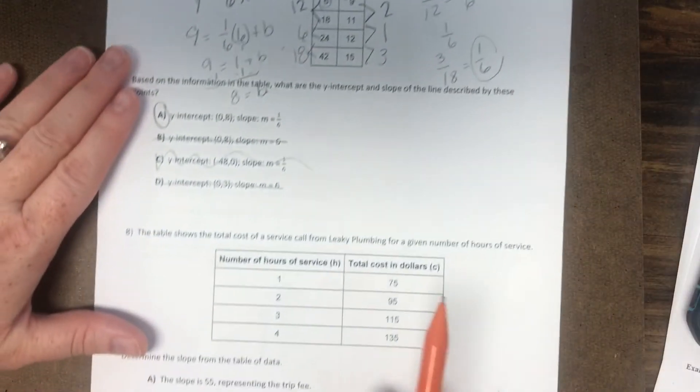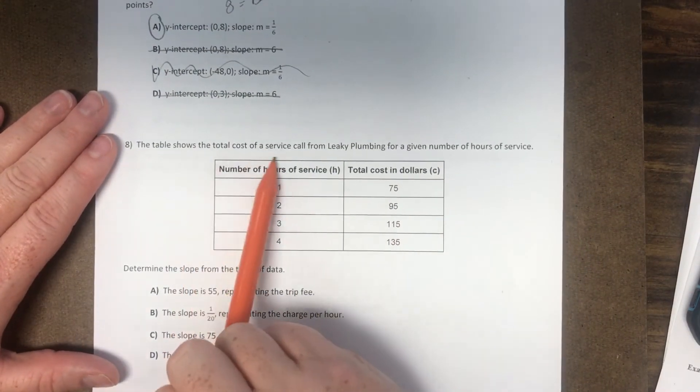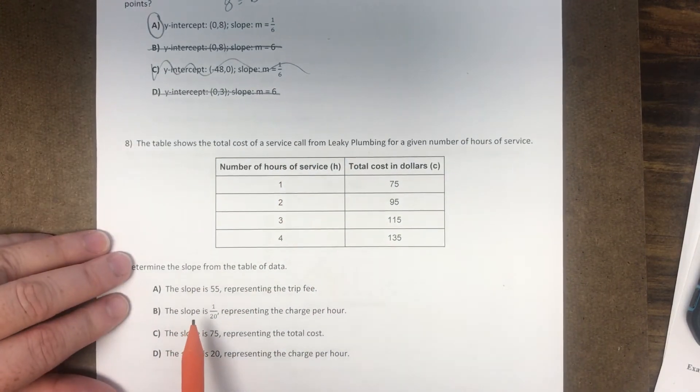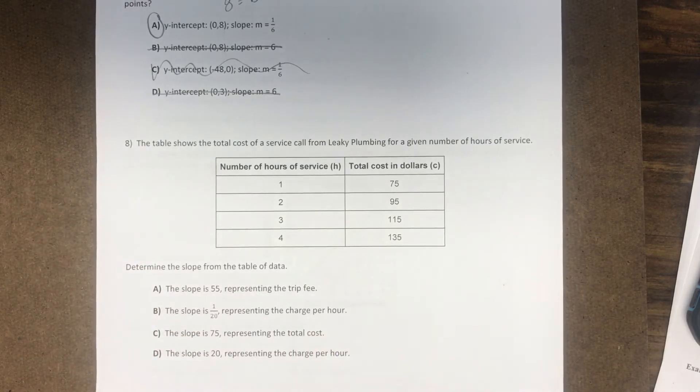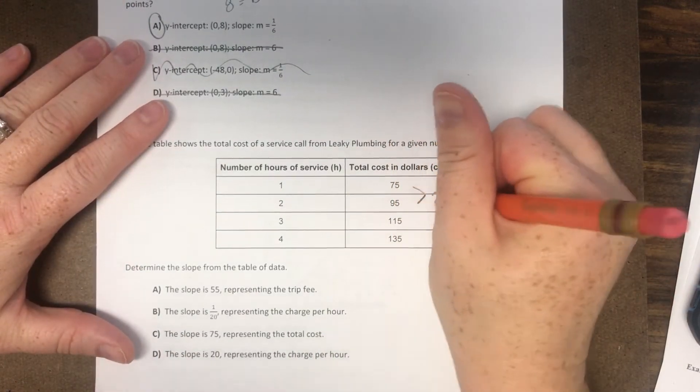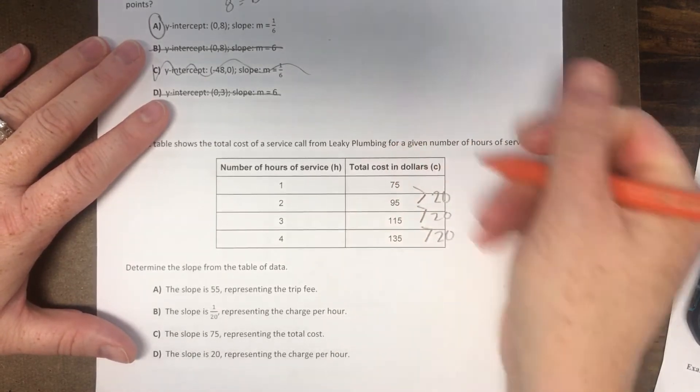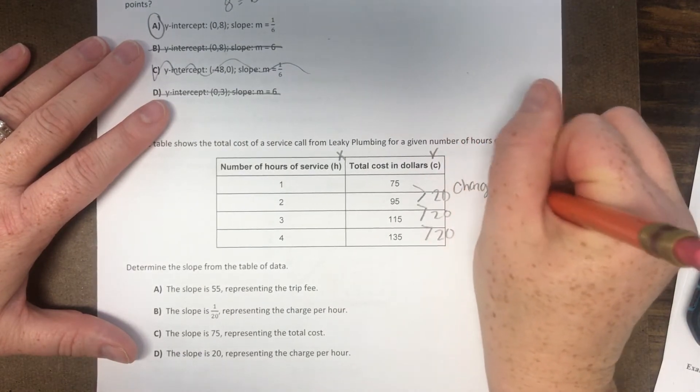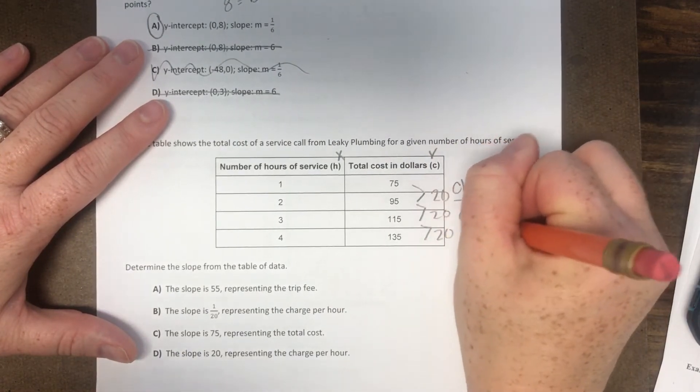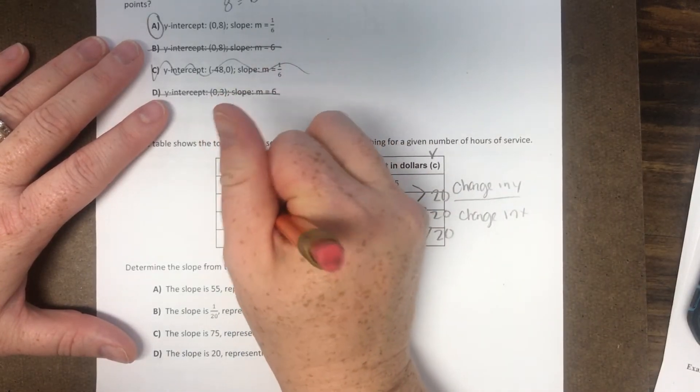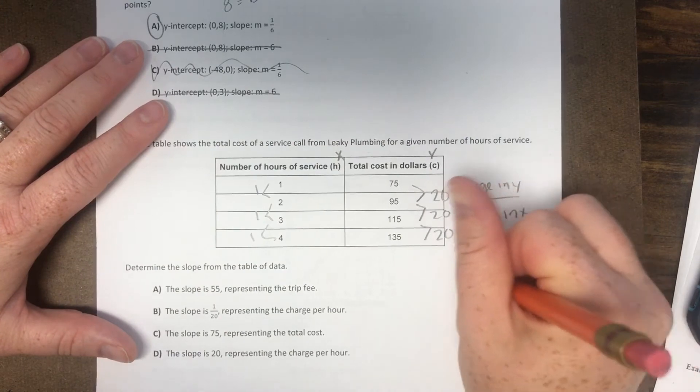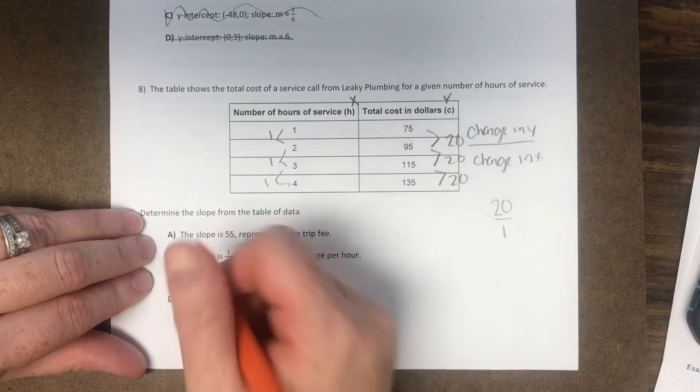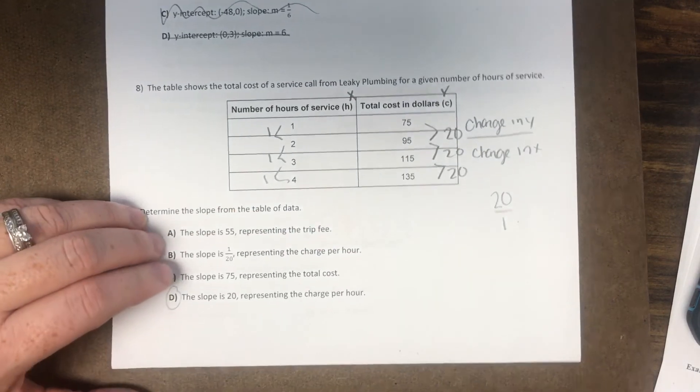Number 8. The table shows the total cost of service call from leaky plumbing for a given number of hours of service. Determine the slope from the set of data. Remember that's the rate of changes, how much it's changing. So it's changing here, it's changing 20. 20, 20. So it's X, Y, the change in Y over the change in X. So here is 1, here is 1, here is 1. So 20 over 1, which is the slope. There's only 1 with a slope of 20. And it's right here.